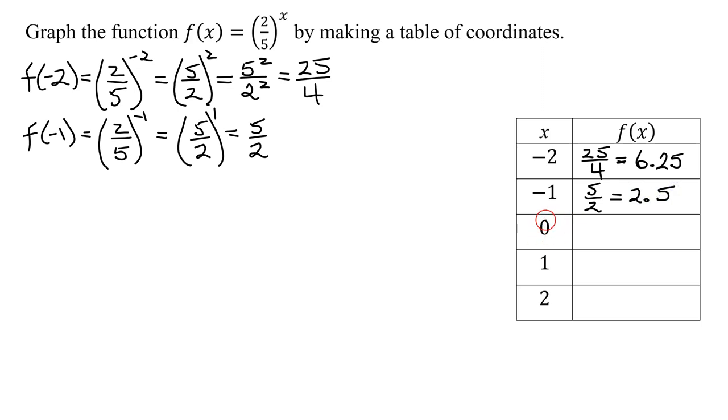Now we need to evaluate f of zero. f of zero is two-fifths raised to the zero power, and any base raised to the zero power equals one, as long as the base doesn't equal zero. Our base in this case is two-fifths, so two-fifths raised to the zero power equals one.